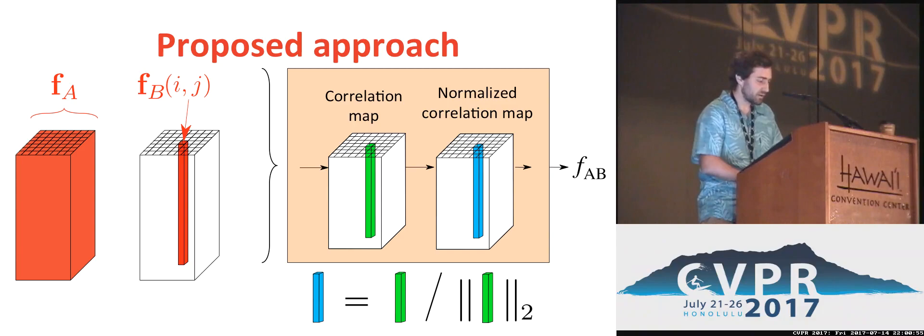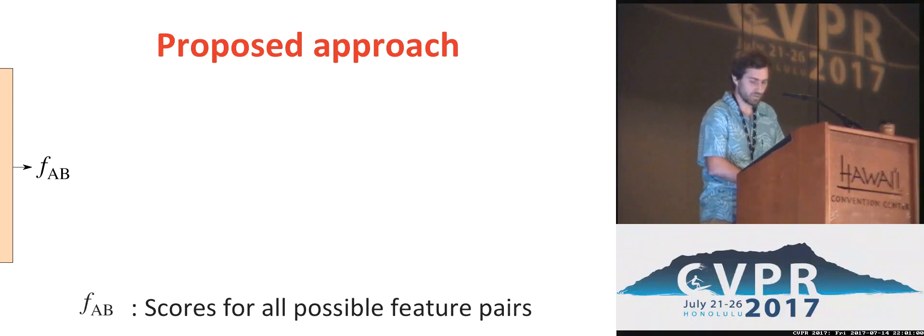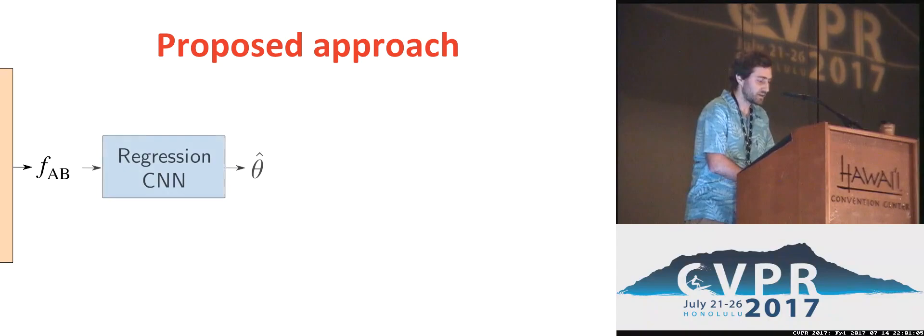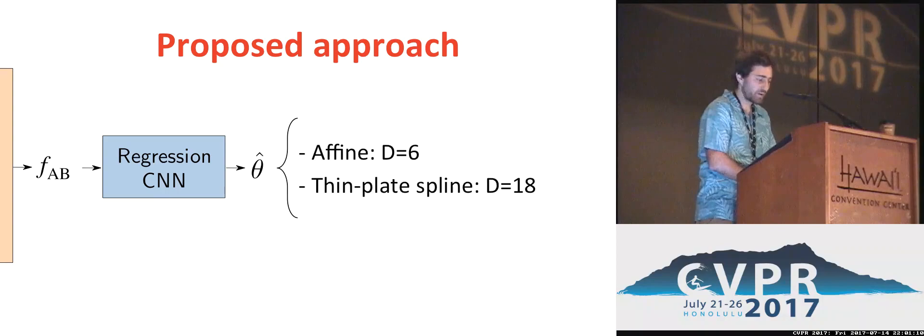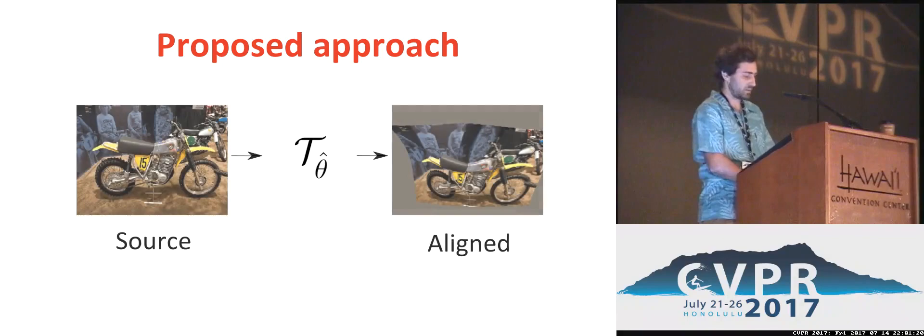Now we have a tensor FAB which contains scores for all possible feature pairs. We input it into the third stage, implemented using a regression CNN which estimates the parameters of a geometric transformation such as 2D affine or thin plate spline. Finally, using this estimated transformation we can align the source image with the target image.